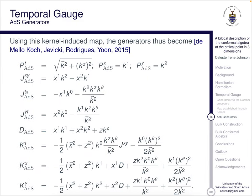Now using this kernel-induced map, we find that the generators become as follows. So we get all of those generators coming out.